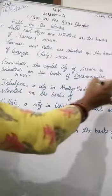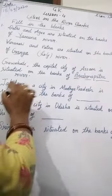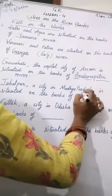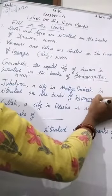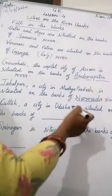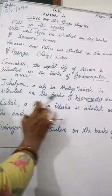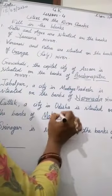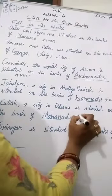Next one: Jabalpur, a city in Madhya Pradesh, is situated on the banks of this river. So which one is it? Mahanadi River. You have to write Mahanadi River.